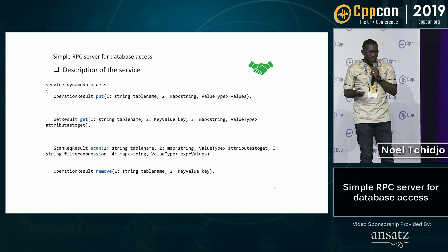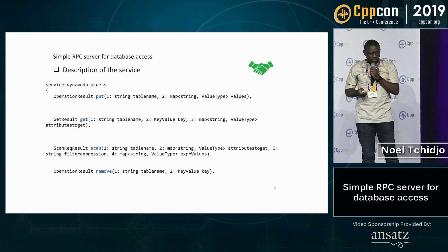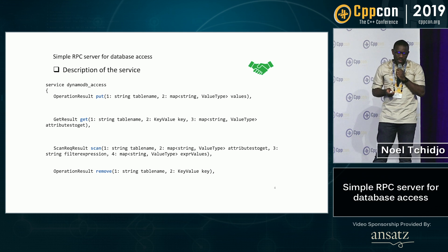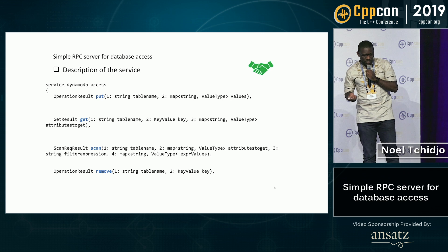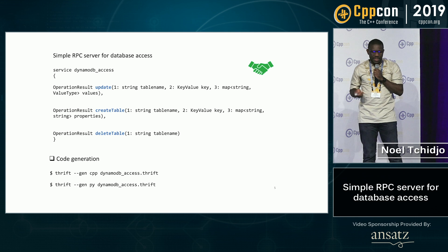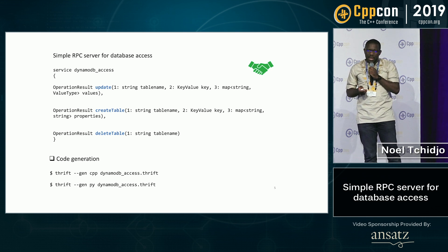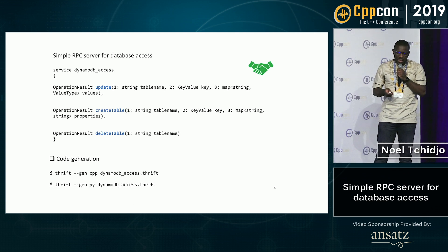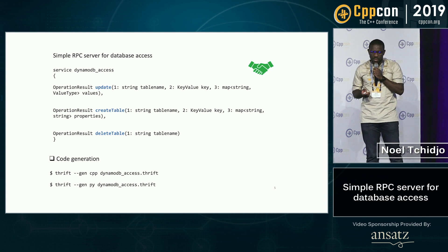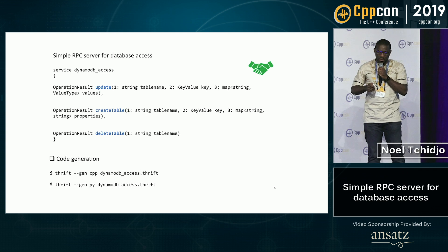In an RPC framework, we need to define the list of functions that the service will provide. This description needs to follow the interface description language syntax. We need to run the first command to generate part of the client and server code — we will have our function with an empty body and we will need to fill it in. The second command line is to generate a skeleton of the client in Python. After running these commands, we will have our RPC server and a client that will communicate.